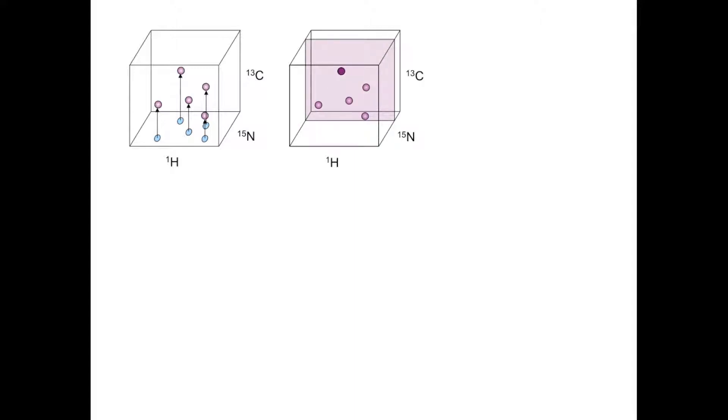In each plane you'll see a different peak. The way shown here, we have protons along the x-axis, carbon along the y-axis, and planes taken from different points along the nitrogen z-axis.